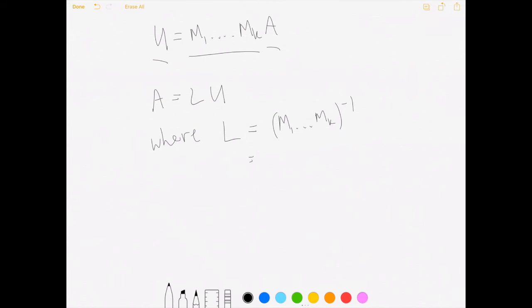So that means that A equals L times U where L is just equal to M1 all the way up to Mk inverse. So L equals Mk inverse all the way up to M1 inverse. So that L is just basically the inverses of each of the operations, the elementary matrices we use to get to U.